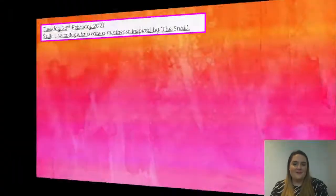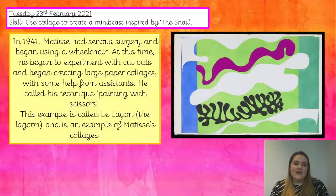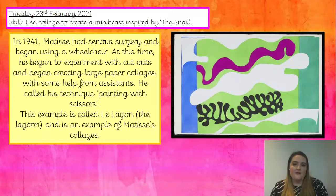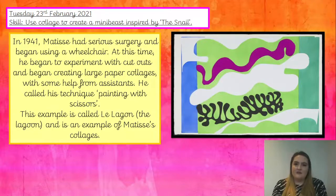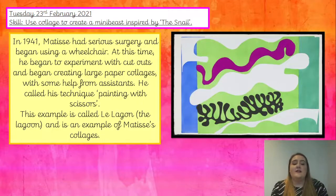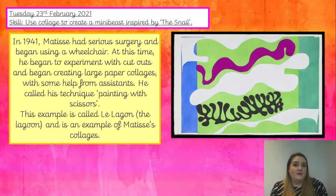Well done, I'm sure you've all got a favourite. In 1941, Matisse had serious surgery and began using a wheelchair. At this time, he began to experiment with cutouts and creating large paper collages with some help from his assistants. He called this technique 'painting with scissors,' which is a really nice way to describe it — he's gone from using paintbrushes to making collages, and it's still just as creative.